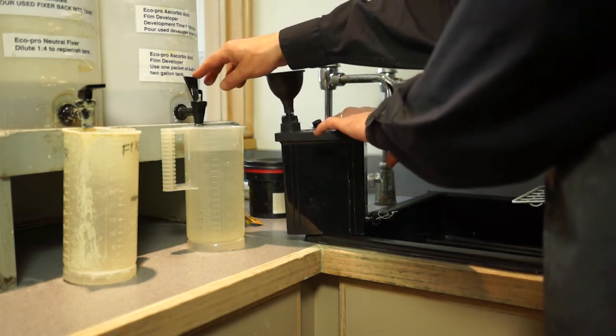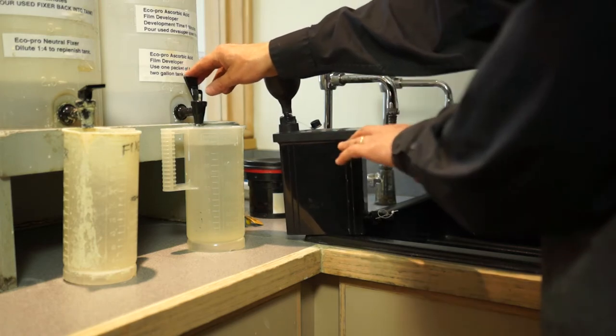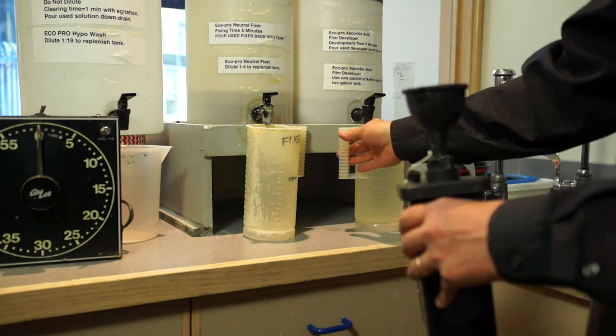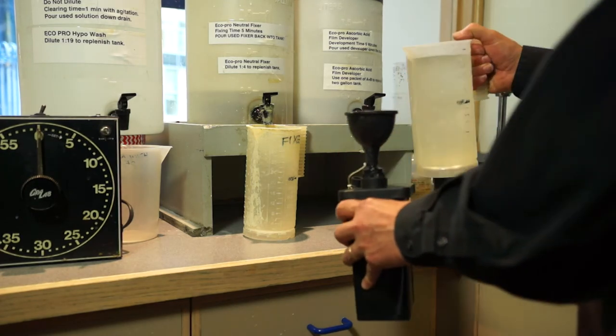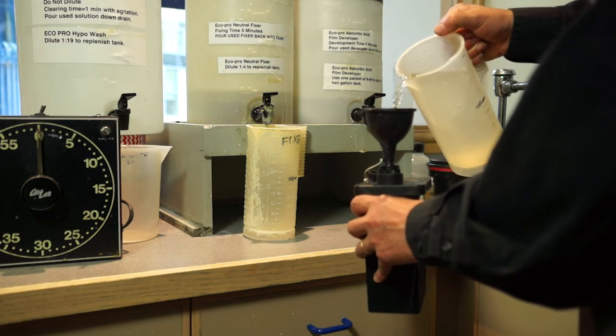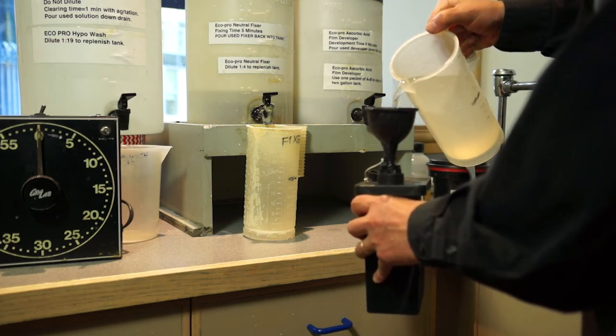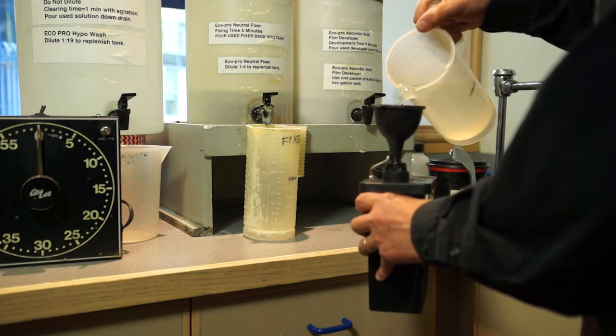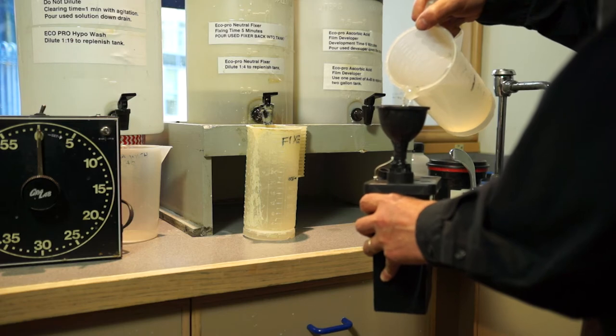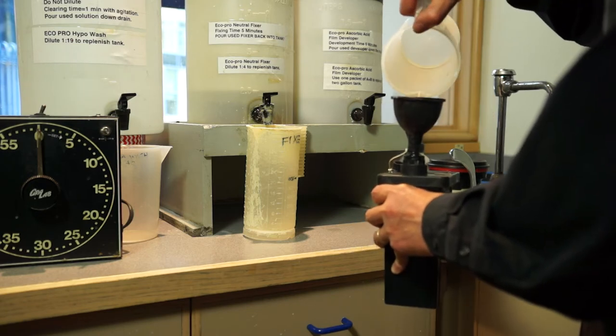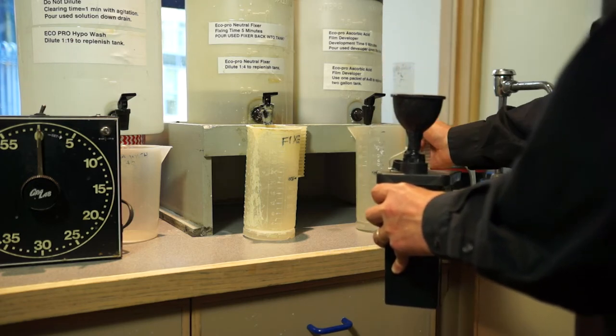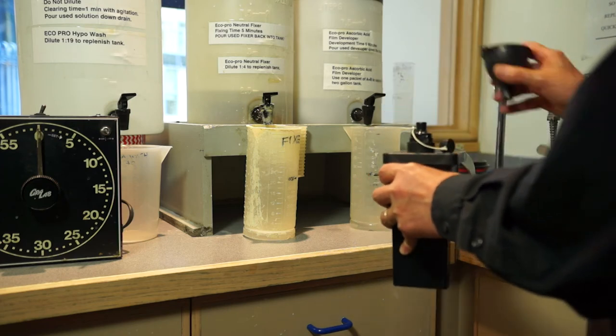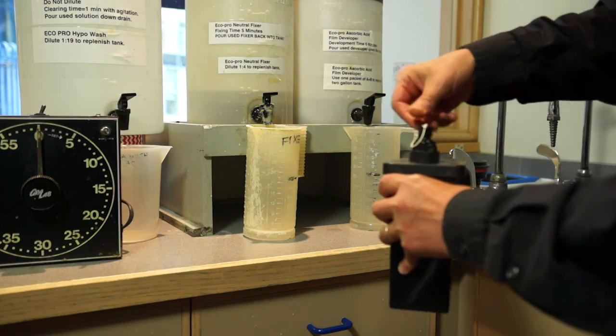Here we'll pour the developer into the tank. It takes quite a while to get the tank full. Once the tank is full, you screw this tight, remove the funnel, put on the cap, and set up your developing time.